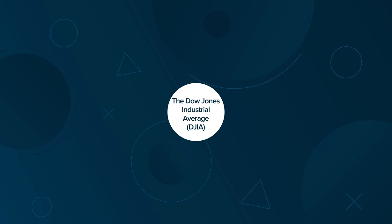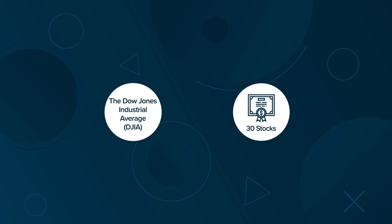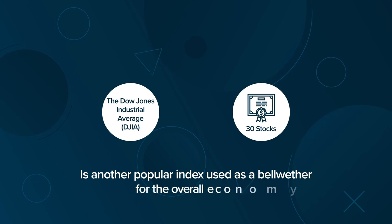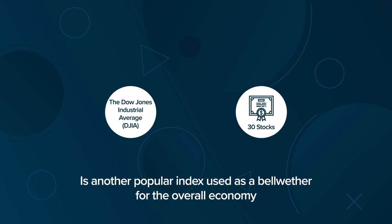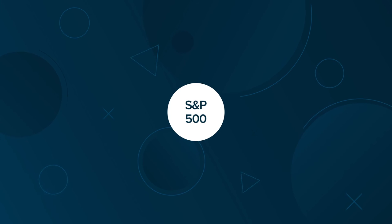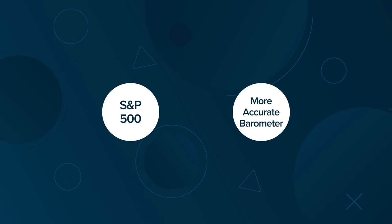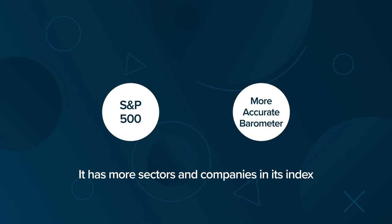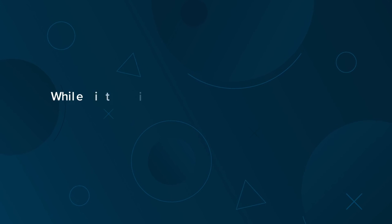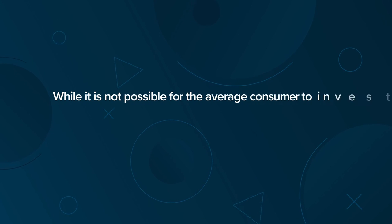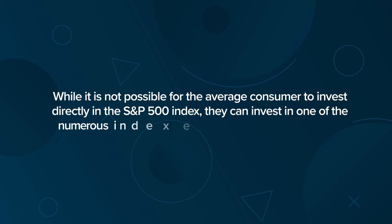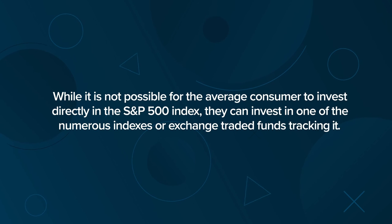The Dow Jones Industrial Average, which consists of 30 stocks, is another popular index used as a bellwether for the overall economy. But the S&P 500 is considered a more accurate barometer of the economy because it has more sectors and companies in its index. While it is not possible for the average consumer to invest directly in the S&P 500 index, they can invest in one of the numerous index funds or exchange-traded funds tracking it.